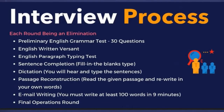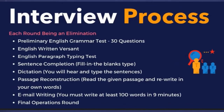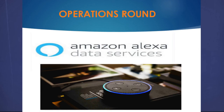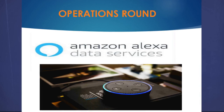After successfully completing all of this, you will receive a call or email for the operations round. Questions in the operations round include: tell about your introduction as written in your resume, why you chose Amazon, what is a data associate, what are Alexa services and how they work, and why you chose this role.